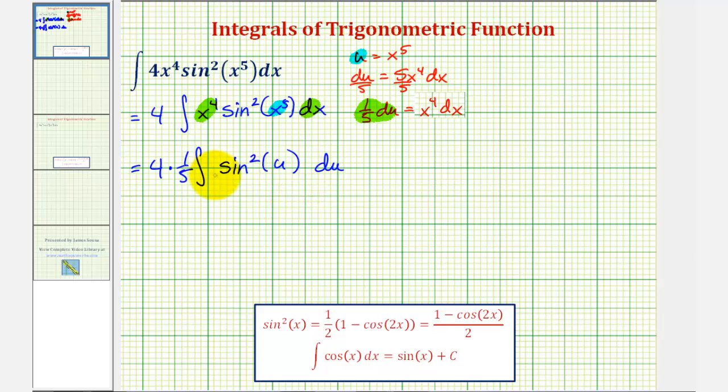We've made some progress, but we don't have an integration formula for sine squared u, so we'll have to apply a power-reducing formula where sine squared u equals one-half times the quantity one minus cosine two u.